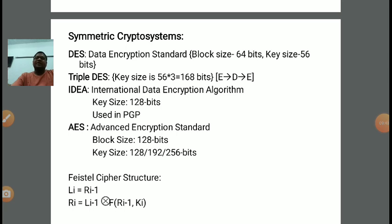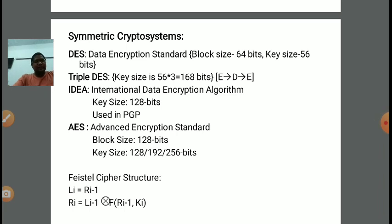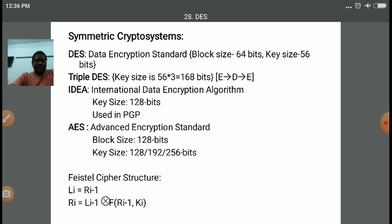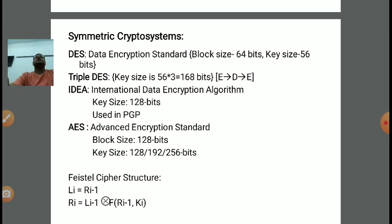The next algorithm is IDEA — also a symmetric cryptosystem, meaning the same key is used for encryption and decryption at both sender and receiver. The full form of IDEA is International Data Encryption Algorithm. In IDEA, the key size is 128 bits, and it is generally used in email encryption. In email encryption, we use PGP, which stands for Pretty Good Privacy protocol.